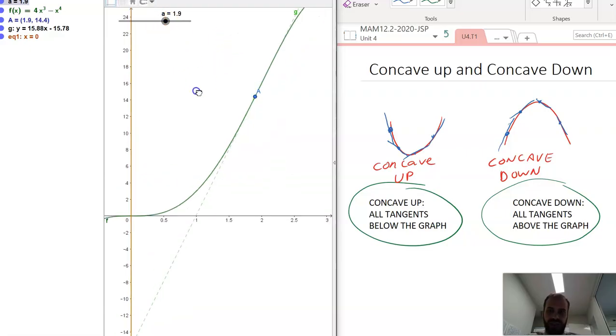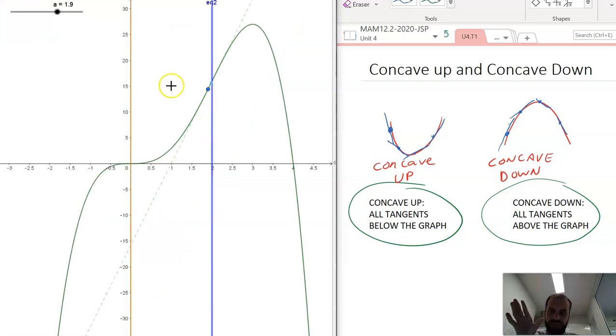And it's going to be below for a little bit longer. Now, we're going to be able to figure out exactly when it's below, but just take my word for it now. It's going to be below from x is equal to 0 to x is equal to 2. And it's below, so that means it's concave up from there to there.